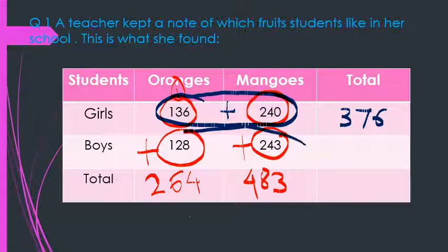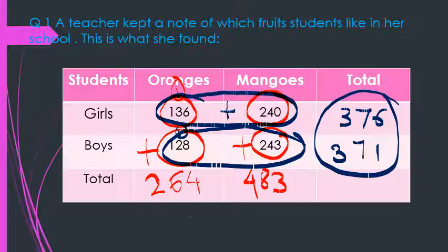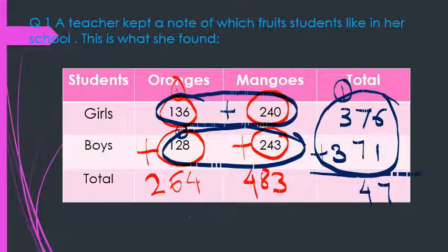Again, the number of boys we need to add up: 128 plus 243. 8 plus 3 is 11, so 1 we write here and carry 1. 4 plus 2 is 6, plus 1 is 7. And 2 plus 1 is 3, giving 371 boys. So to find the total number of children in this school, you need to add the number of girls and boys: 6 plus 1 is 7, 7 plus 7 is 14 so 4 we write and carry 1, 3 plus 3 is 6 plus 1 is 7, giving 747.